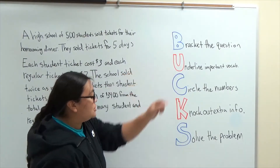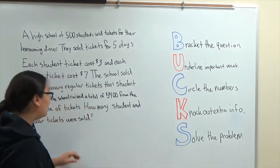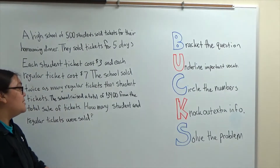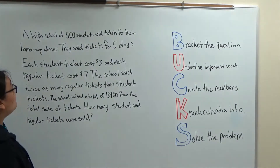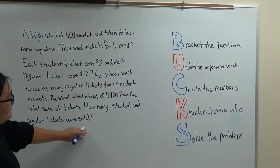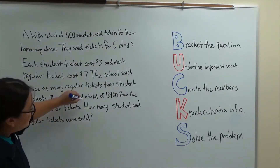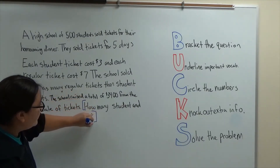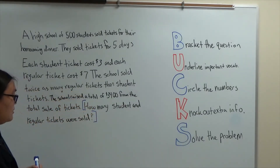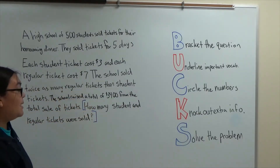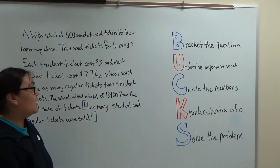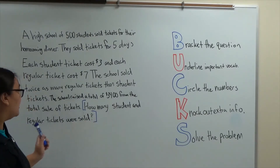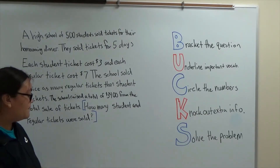— bracket the question. So I'm going to come over here to my example problem and find my question, which is here at the very bottom, and I'm going to bracket it. So now I know that whatever I do, my answer needs to reflect my question, which is: how many student and regular tickets were sold?